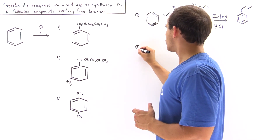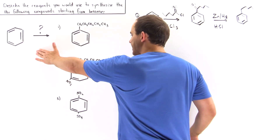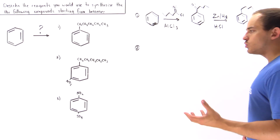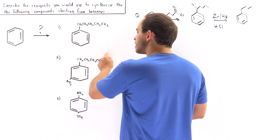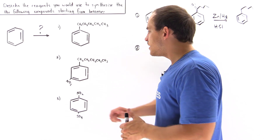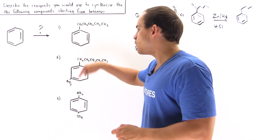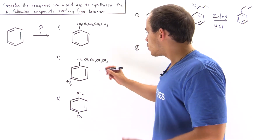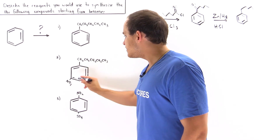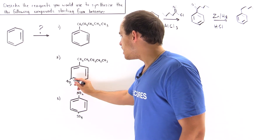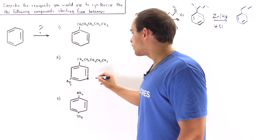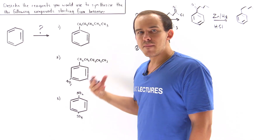Now let's move on to product number two. We want to go from benzene to a di-substituted benzene. We still want the same five-carbon chain group, but we also want to place a nitro group (NO2) on a specific carbon. If this is carbon position one, then the nitro group is at carbon position five, which is equivalent to carbon position three — the meta position.